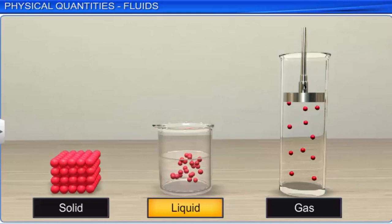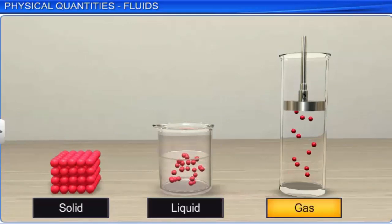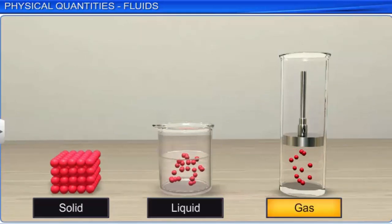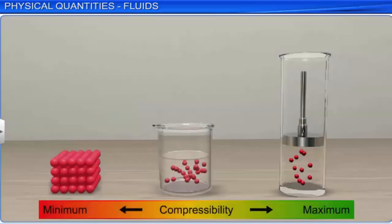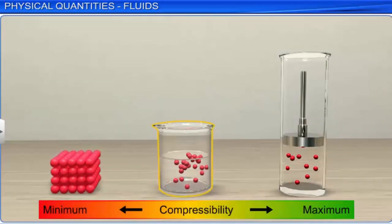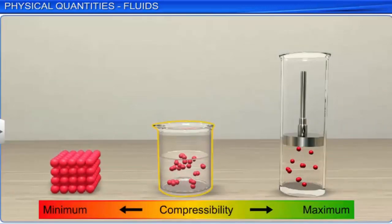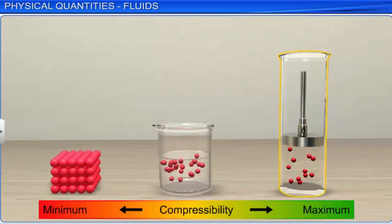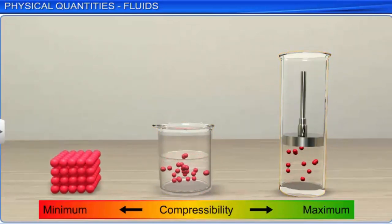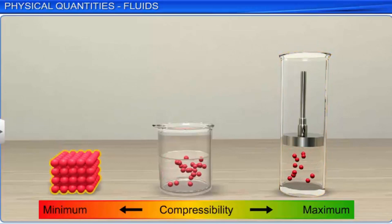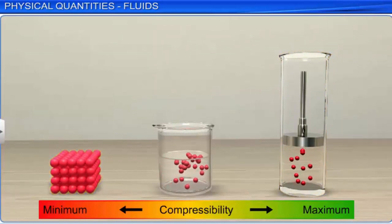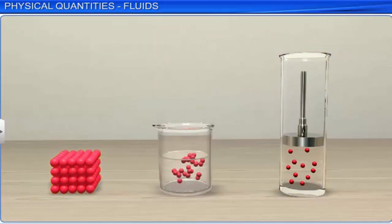Liquids are 10 to the power 5 times less compressible than gases, but are about 10 times more compressible than solids. This is because the molecules in a liquid are not as closely packed as in a solid, but are closer to each other compared to a gas.